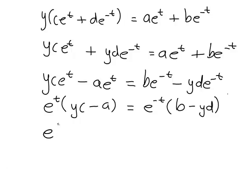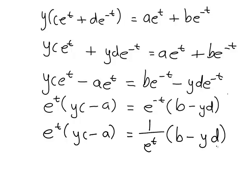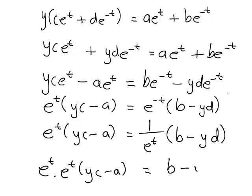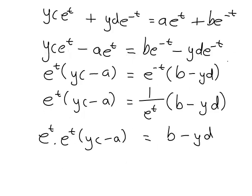To reduce it further to just one term with t, it helps to note that e^(-t) is the same as 1 divided by e^t. So on the right we have (b minus yd) divided by e^t. We can cancel e^t from the right by multiplying both sides by e^t, giving e^t times e^t times (yc minus a) on the left, and just (b minus yd) on the right. By index laws, e^t times e^t equals e^(2t).